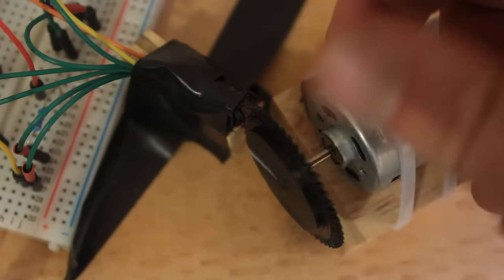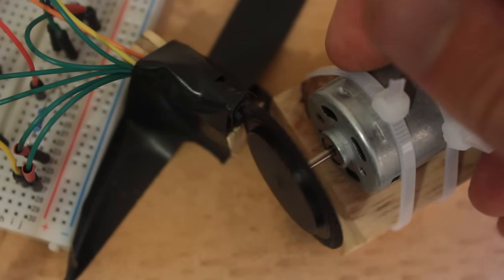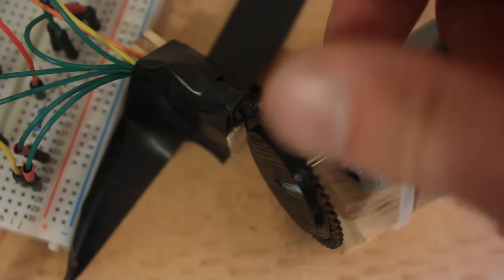I'll also give the part number of the photo interrupters I'm using, and I'll put the SCAD code on GitHub, and that'll all be in the description as well. Alright, thanks for watching.